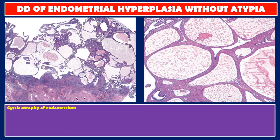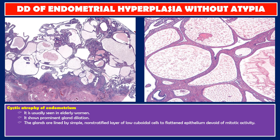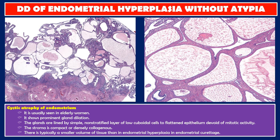Cystic atrophy of endometrium is usually seen in elderly women. It shows prominent gland dilation; the glands are lined by a simple non-stratified layer of low cuboidal to flattened epithelium devoid of mitotic activity. The stroma is compact or densely collagenous. There is typically a smaller volume of tissue than in endometrial hyperplasia on endometrial curettage.